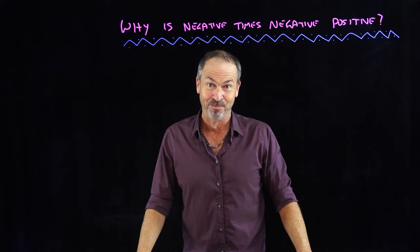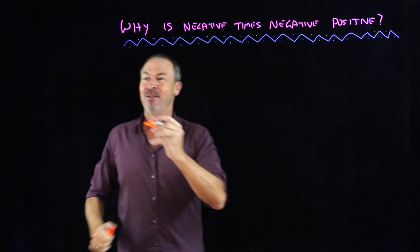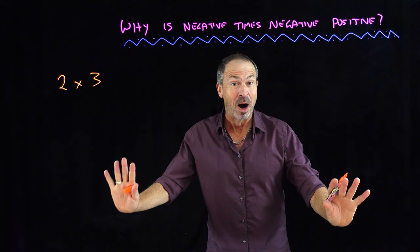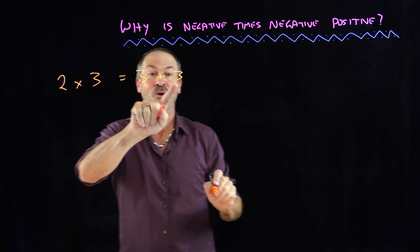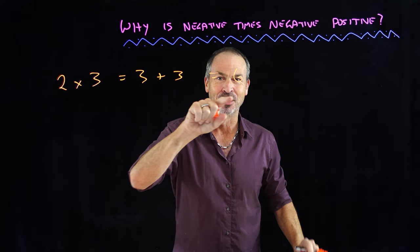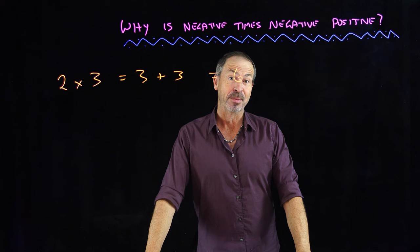Let's start back at the beginning with positive times positive. For example, positive two times positive three is positive six. In the world of counting numbers, we interpret multiplication as repeated addition. We read this as two groups of three — a three and another three — and three and three together make positive six. Positive times positive is positive.